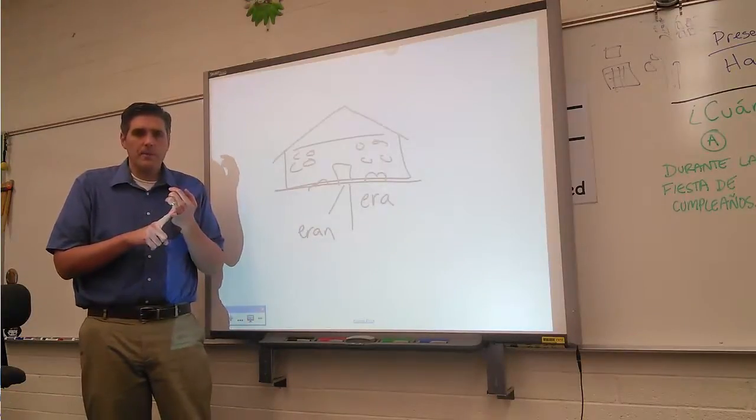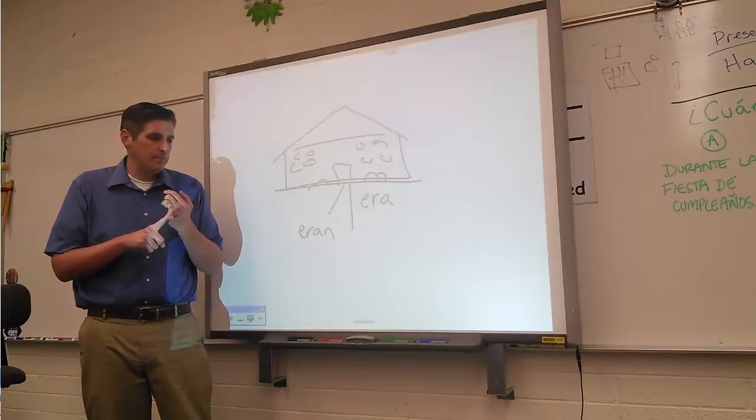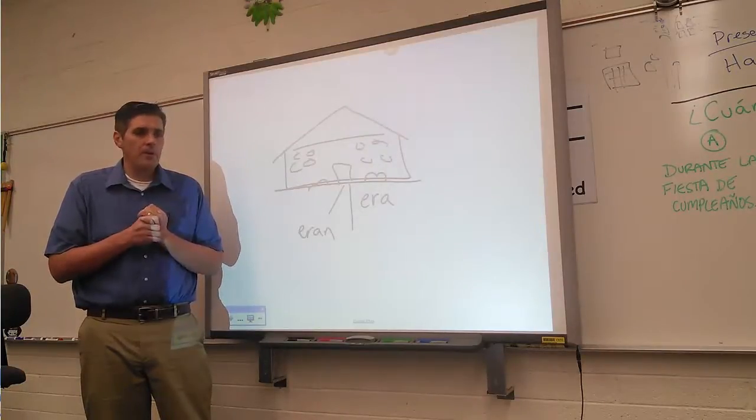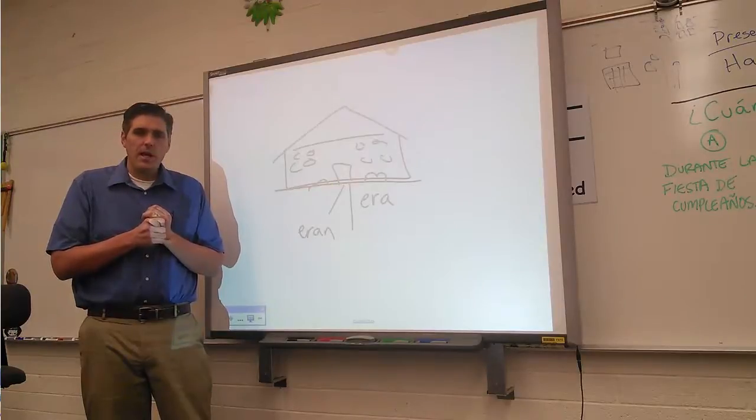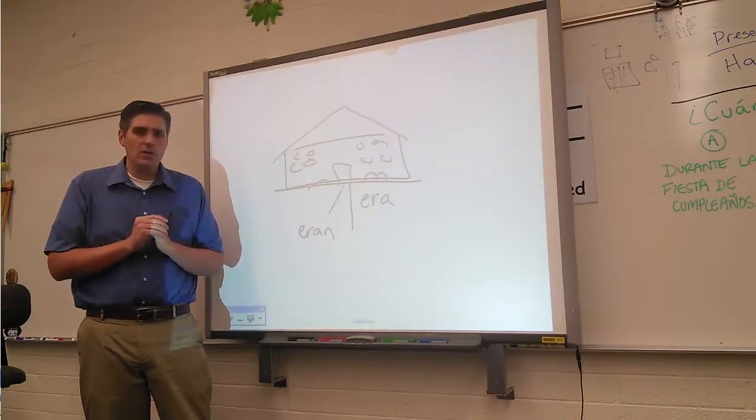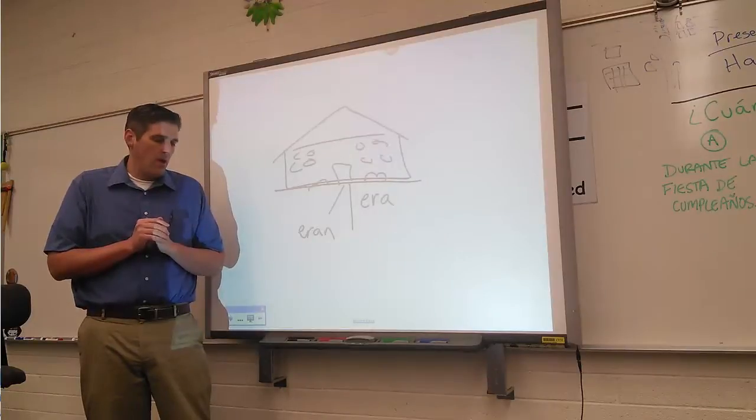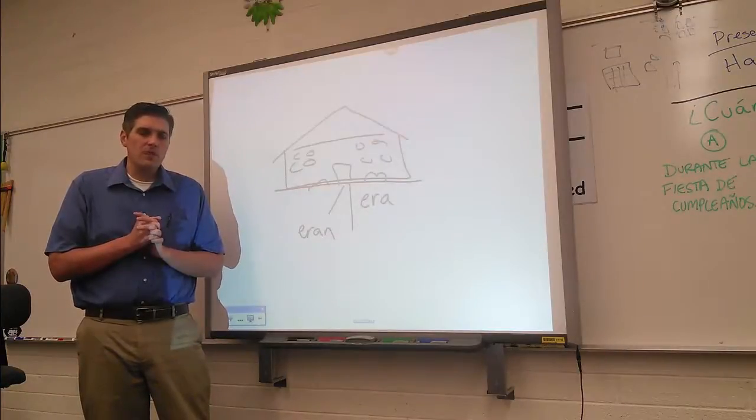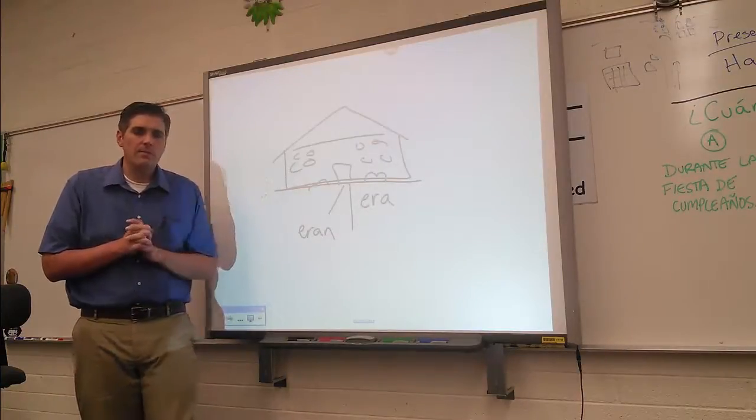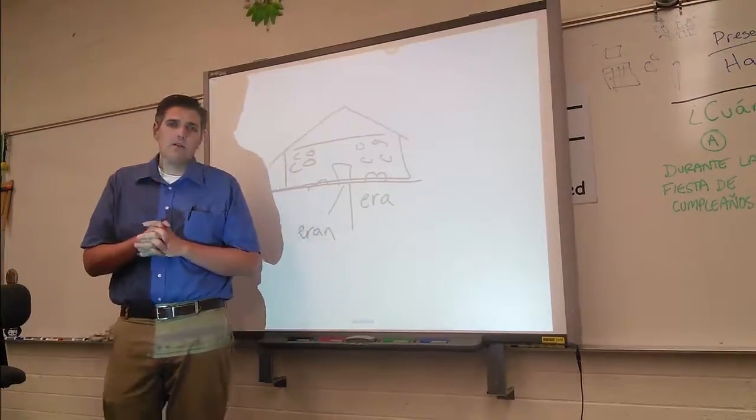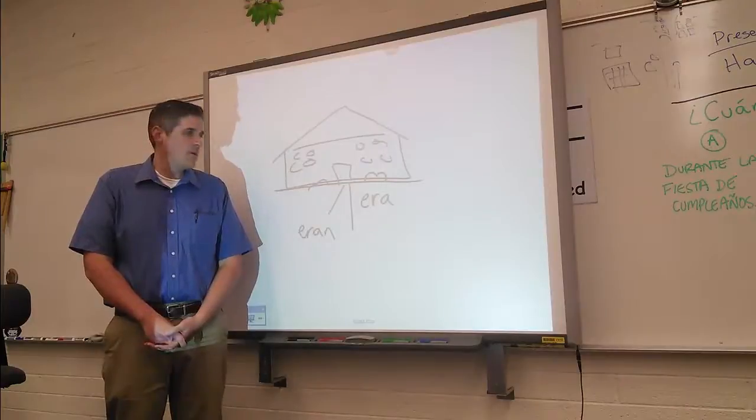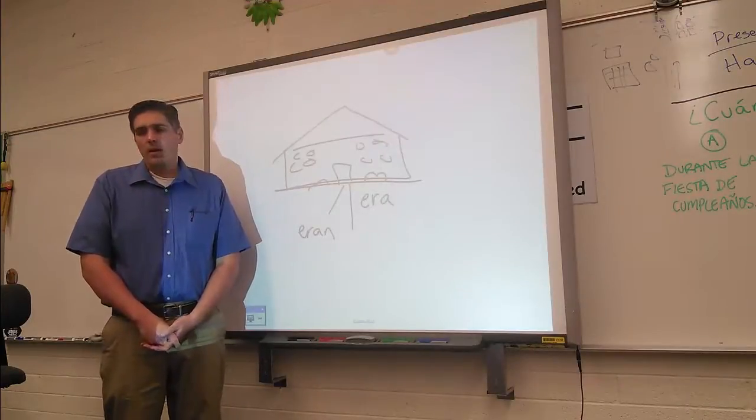I want you to write one sentence to tell me how old you were when you started at this high school. How old were you when you started studying here? That's your first one. Your second one, describe the place that you lived when you were five years old. And you might have to do one or two sentences on that one.